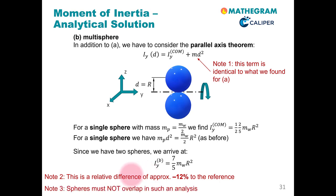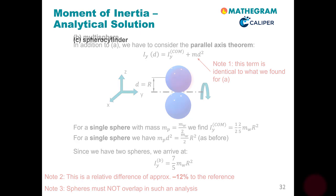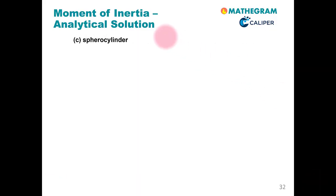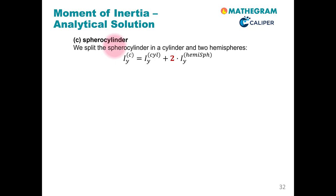Please note that we cannot improve this calculation by considering more than two spheres, because the spheres in this simple analysis cannot overlap. Let us transition now to the last approach: the sphero-cylinder approach. You will see that this derivation is more involved.